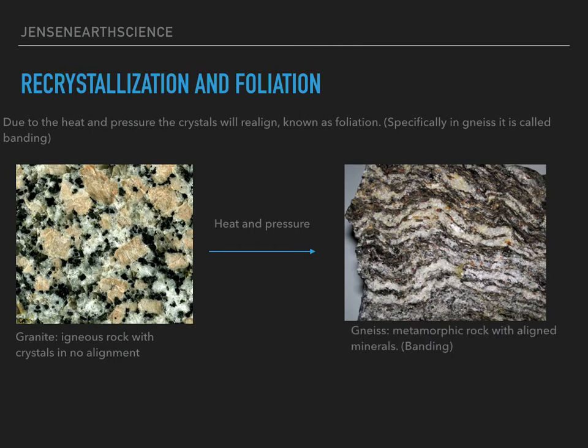Metamorphic rock gneiss is aligned with minerals, and in gneiss's case, it's called banding. You can see the rock on the left — the minerals are kind of just blobs, put all over the place. The one on the right, the metamorphic rock, you can see the specific alignment of those minerals.